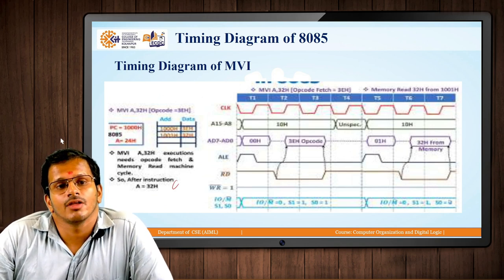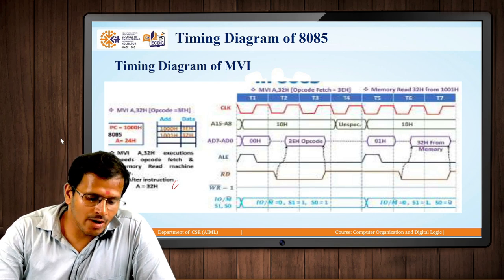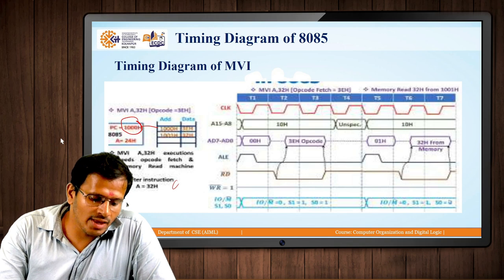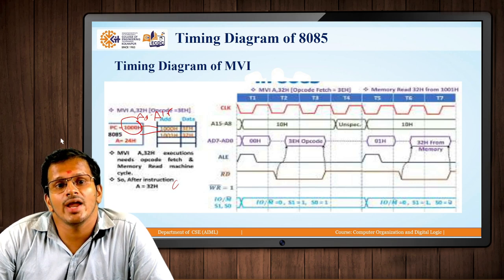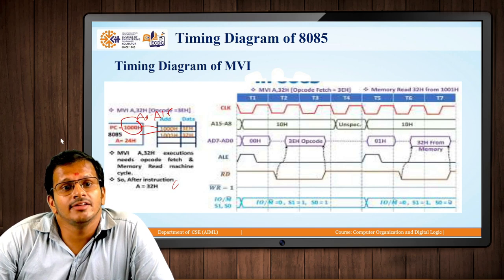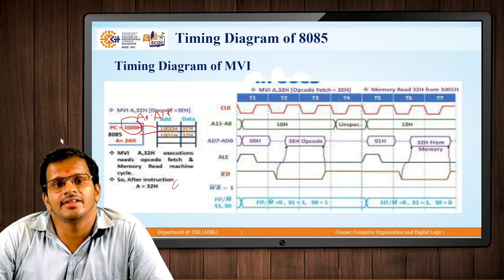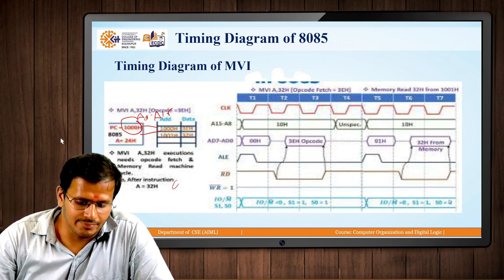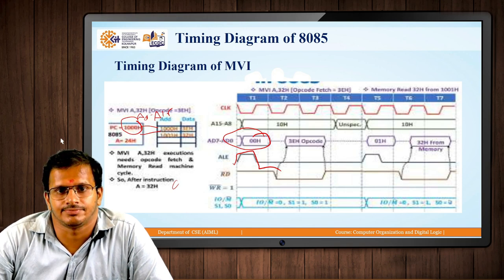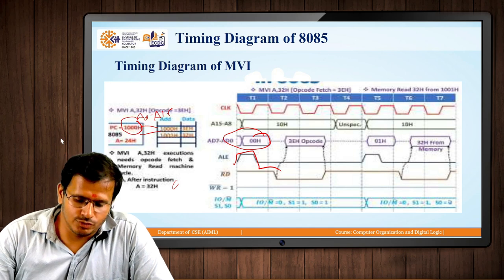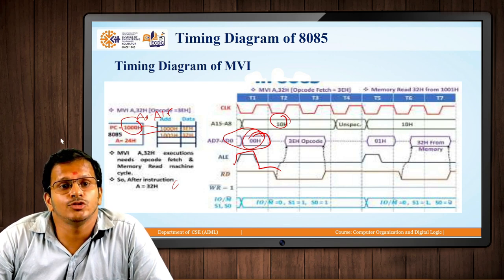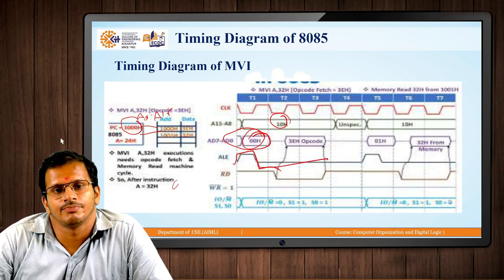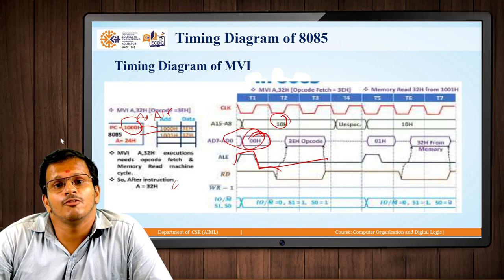For MVI, we first need the opcode fetching process. The program counter is again declared as 1000H, which is passed through address lines A0 to A15. AD0 to AD7 becomes A0 to A7, and Address Latch Enable should be high. The value of the program counter 1000H means 10H is stored in A8 to A15 and 00H in A0 to A7. When address work is done, ALE becomes low, so AD0 to AD7 works as D0 to D7.